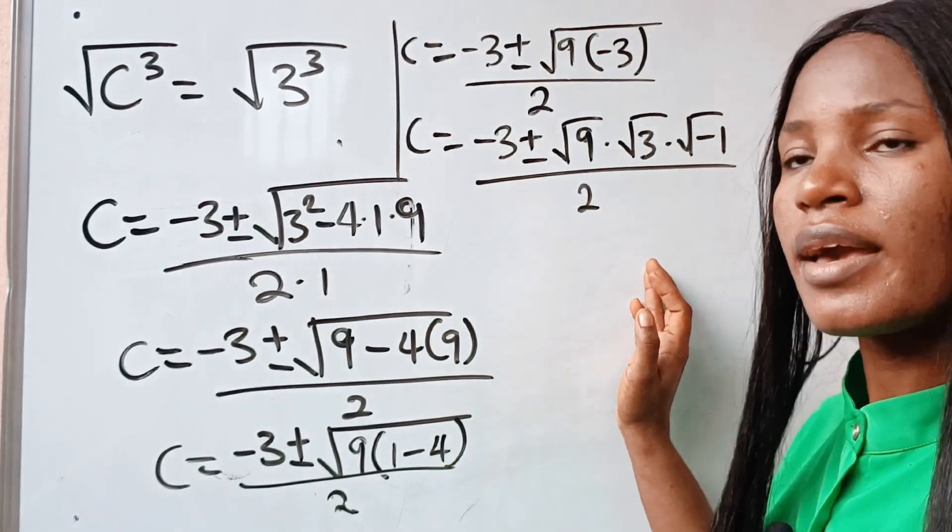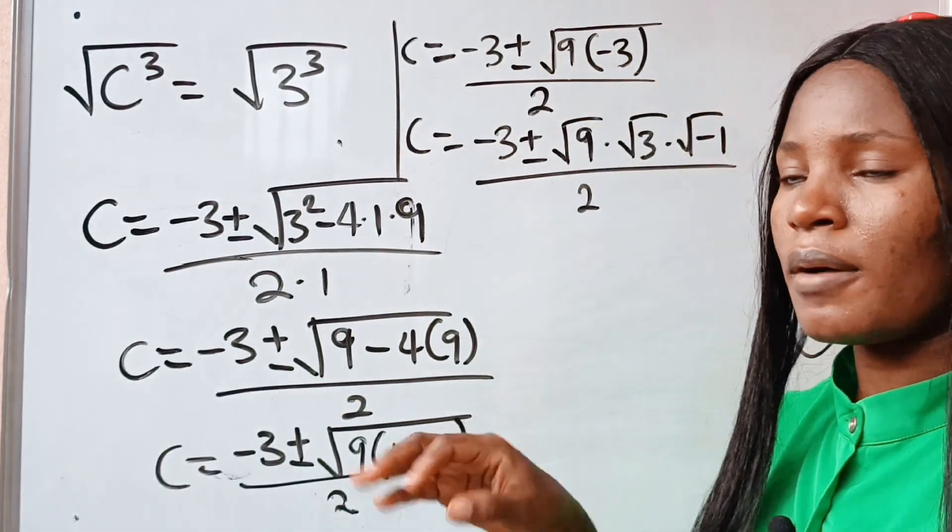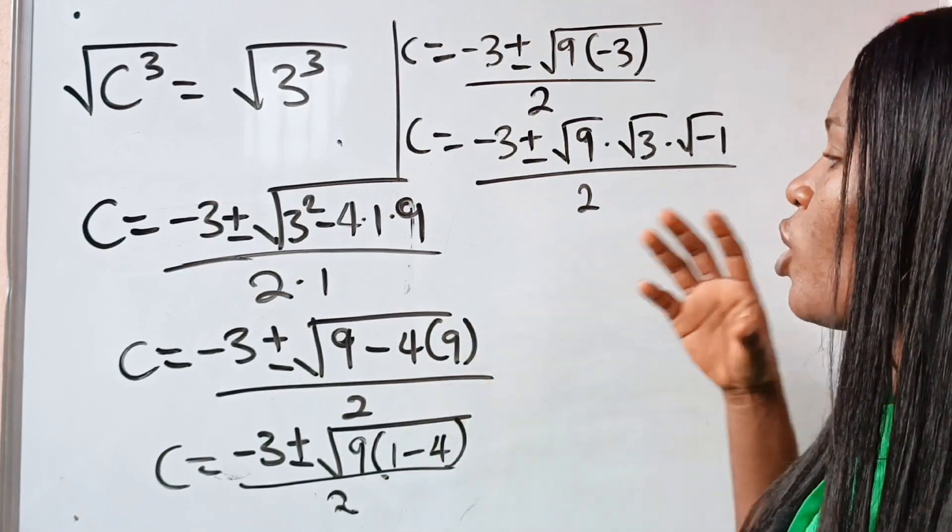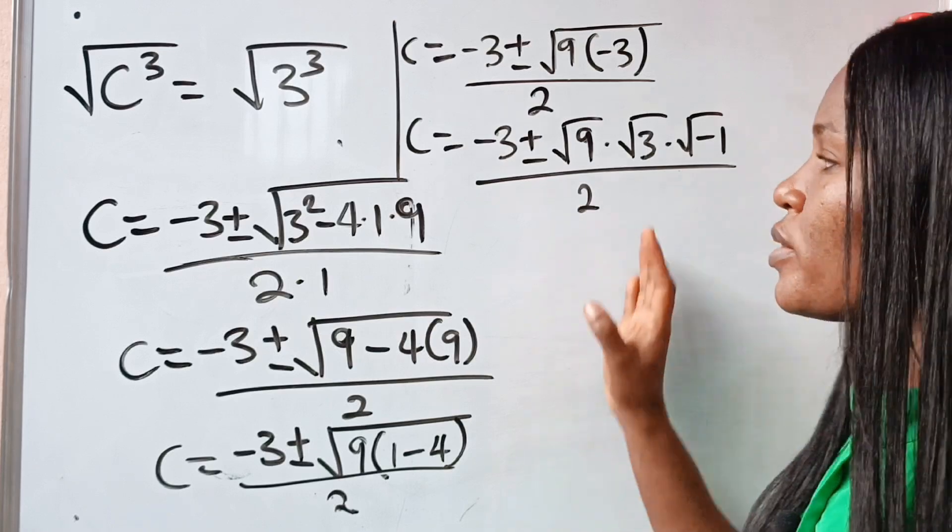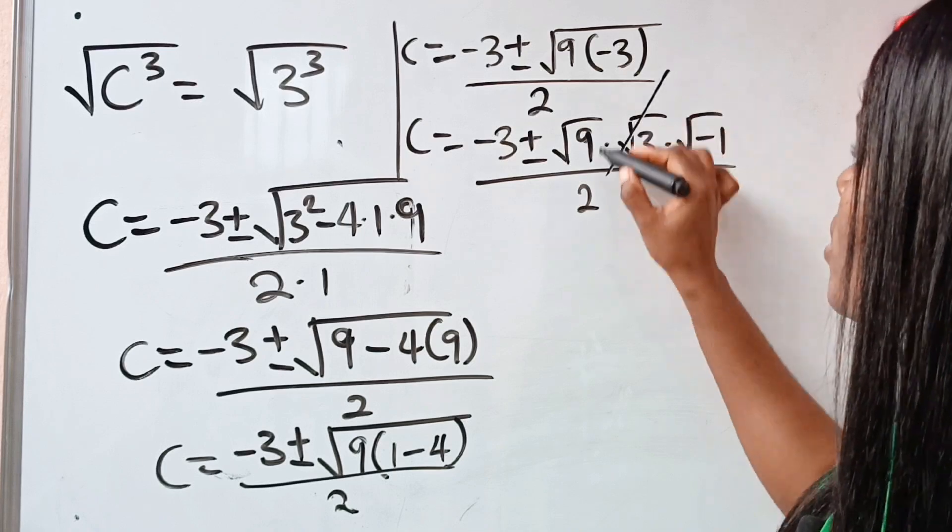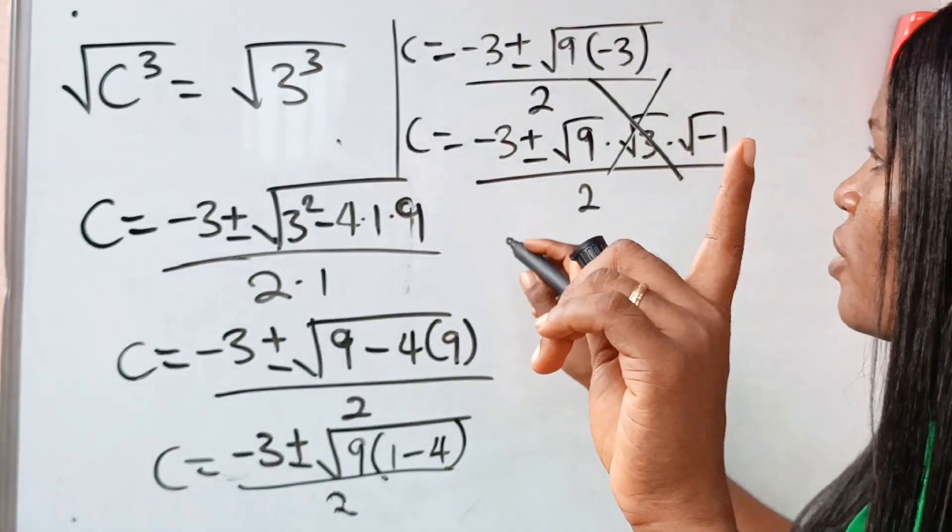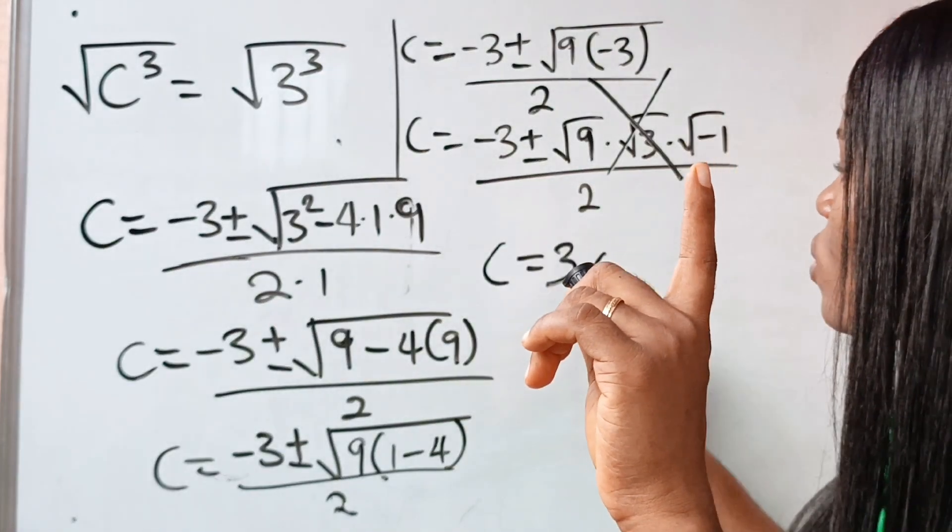Now, I don't want to continue with this, yes, because getting a discriminant as a negative number is enough to tell us that we don't have any real value for the value of c when we solve this quadratic equation. So let us reject this. The only real value of c is the first value that we got that c is equal to 3.